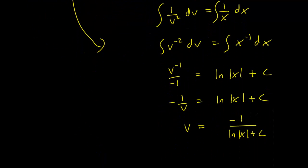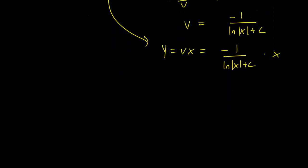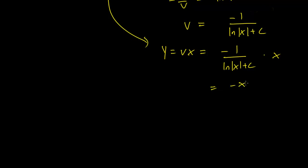So we have y equals vx equals minus 1 over log x plus c times x. And this is going to be our general solution in terms of y.